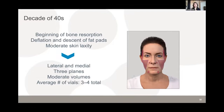In the 40s, bone resorption begins, fat pads deflate and descend, and skin laxity increases. Sculptra can be injected in three planes: super-periosteal for lift, subcutaneous for volumization, and subdermal for finer wrinkles and textural changes. Average vials per session are three to four, depending on the volume being treated.